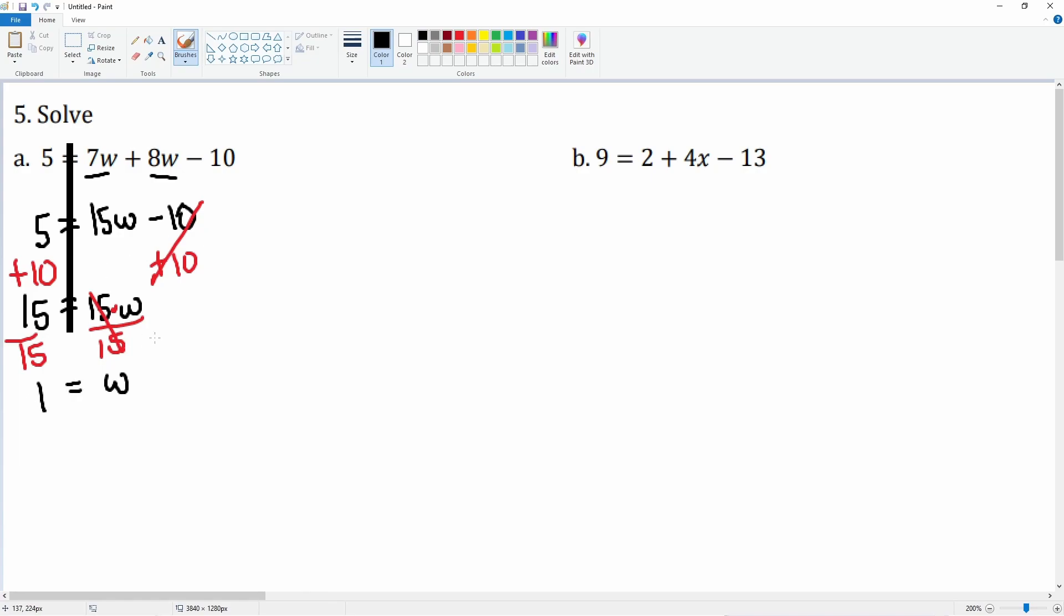Next, let's do question b. We'll start by separating the left side from the right hand side. Let's look for like terms here. We have 2 and negative 13 that combine, giving us negative 11. Bring down the plus 4x.